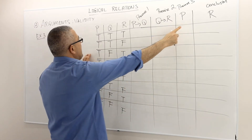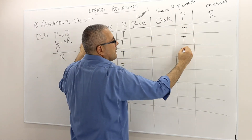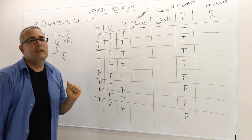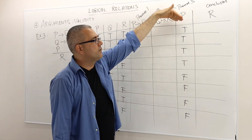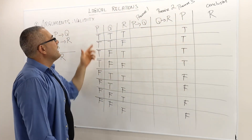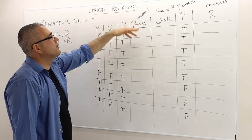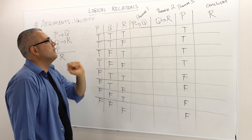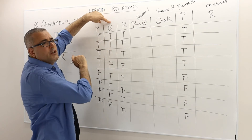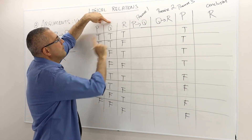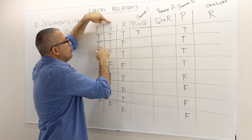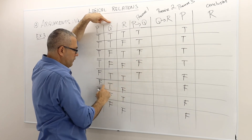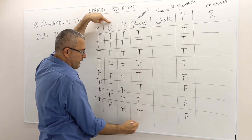I can just copy P here. P is true, true, true, true, false, false, false, false. Given the atomic sentences' truth values, premise number one — P implies Q — is true in all cases except when Q is false and P is true. Looking at the P and Q columns, the values for P implies Q come out as: true, true, false, false, true, true, true, true.